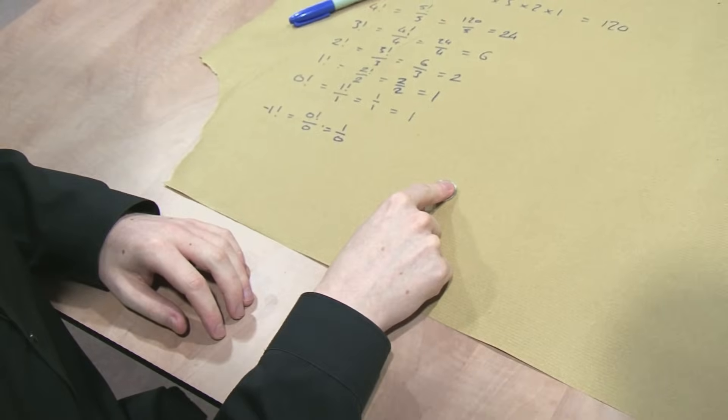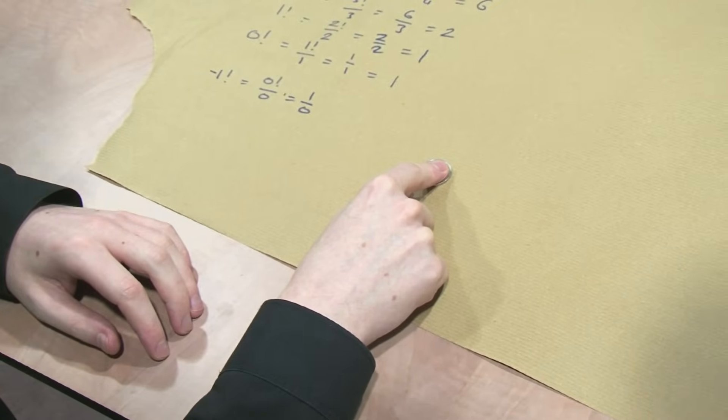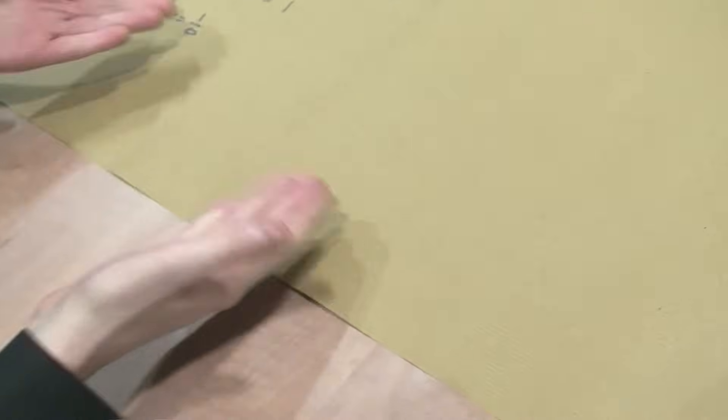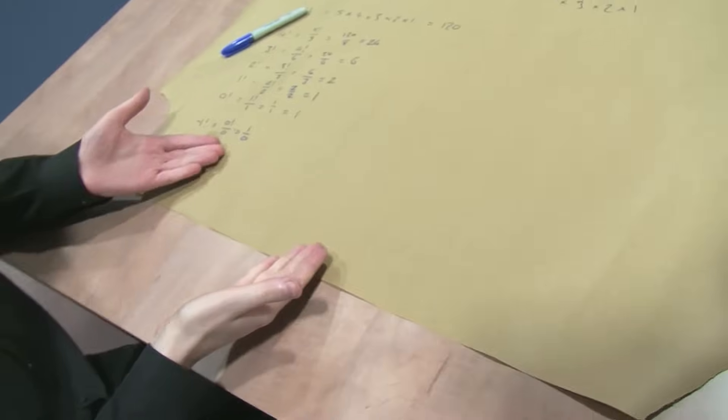Now we're going to take the last coin away. This is where it gets a little philosophical. We have zero objects. How many ways are there to arrange zero objects? There's one way to do it. There it is. Do you want to see me do it again? There it is. Slightly philosophical, but we say there is one way to arrange zero objects. So again, the pattern holds. 0 factorial equals 1.